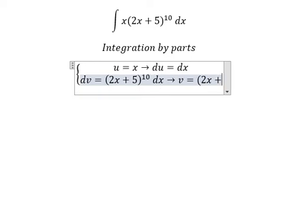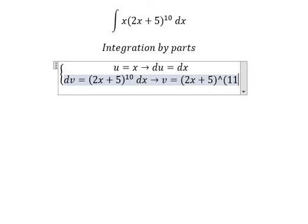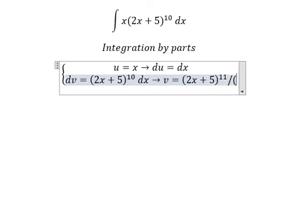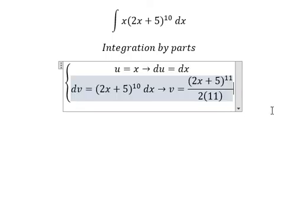We will have (2x+5) to the power of 10, plus one, so we got 11. We have the coefficient 2 from 2x. We put 2 here, multiply by 11, and we got 22. So v = (2x+5)^11 / 22.